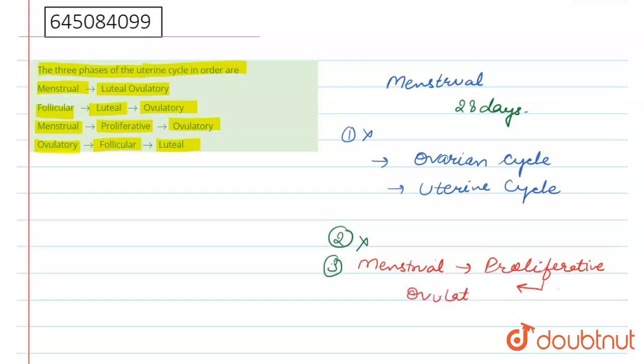Because of this, we can say that third option is right. Now move to fourth option - ovulatory, then follicular, then luteal - is also wrong. So the right answer is option third.